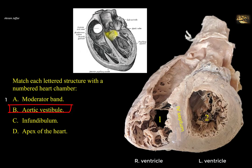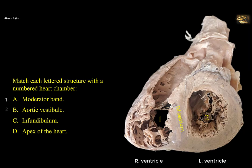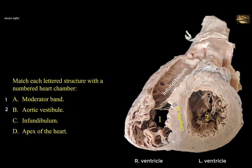The aortic vestibule is the outflow tract of the left ventricle that leads to the aortic orifice. It lies between the upper end of the interventricular septum, membranous part of the interventricular septum, and the anterior cusp of the mitral valve — it is a feature of the left ventricle, so B goes with 2. The infundibulum is the upward narrowing of the right ventricle as it approaches the pulmonary orifice. It is funnel-shaped — hence the name infundibulum, meaning funnel in Latin — also called the conus arteriosus. Its walls are smooth, lacking the trabeculae carneae. So C goes with 1. The apex of the heart, D, is found in the left ventricle, so D goes with 2.